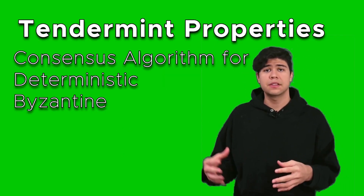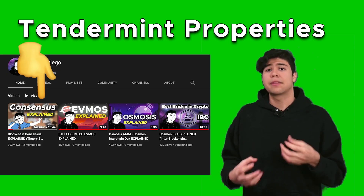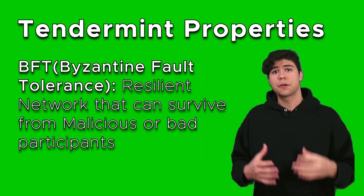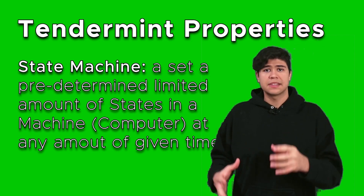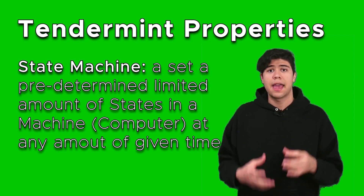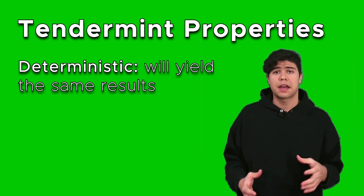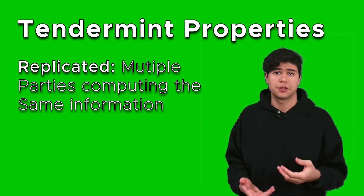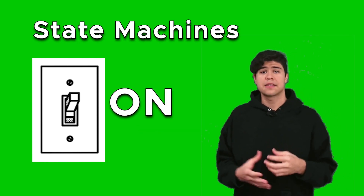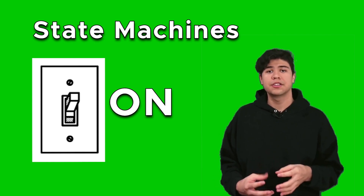Tendermint is a consensus algorithm for deterministic Byzantine fault-tolerant replicated state machines. Consensus means nodes need to come to an agreement. BFT, Byzantine fault-tolerance, means the network can resist nodes going offline or being malicious. A state machine means information is in a finite state with predetermined ways it can change, called state transitions. Deterministic means no matter how many times you run it, you get the exact same results — no randomness. Replicated means there are multiple copies of this information. An example is a light switch: finite states of on or off, with transitions between them, making it indisputable.